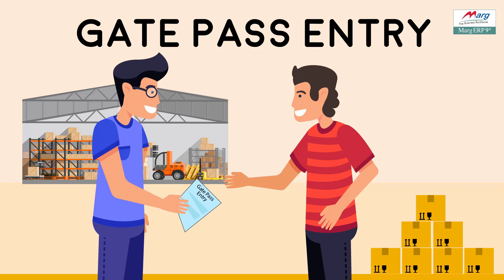But you will get the benefit by using the gate pass entry option in Mark software: if you do not generate the purchase bill after receiving goods, you will make its gate pass, due to which a list will be generated showing that a particular entry is in gate pass and which particular products will come into that bill. Then you will generate the bill after confirming with the party. So now let's see its procedure in the software.